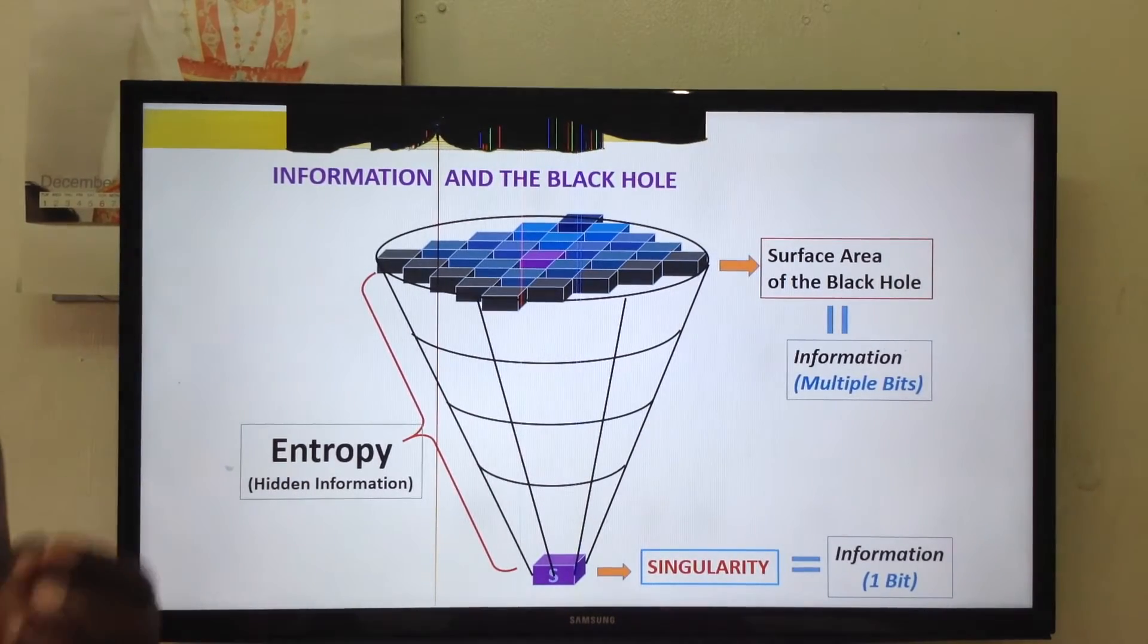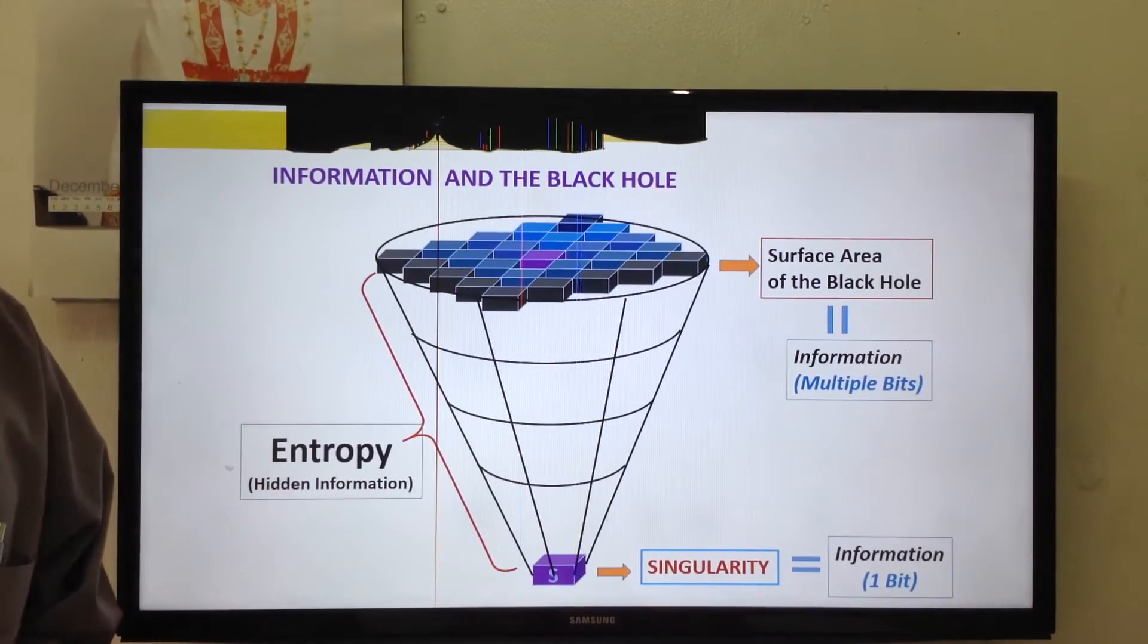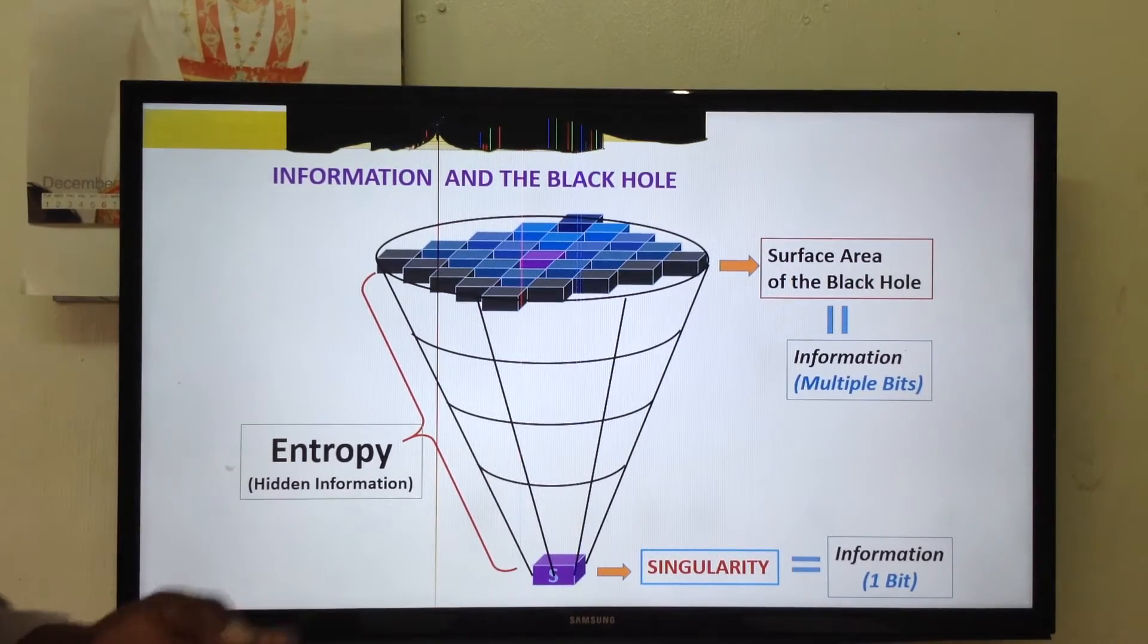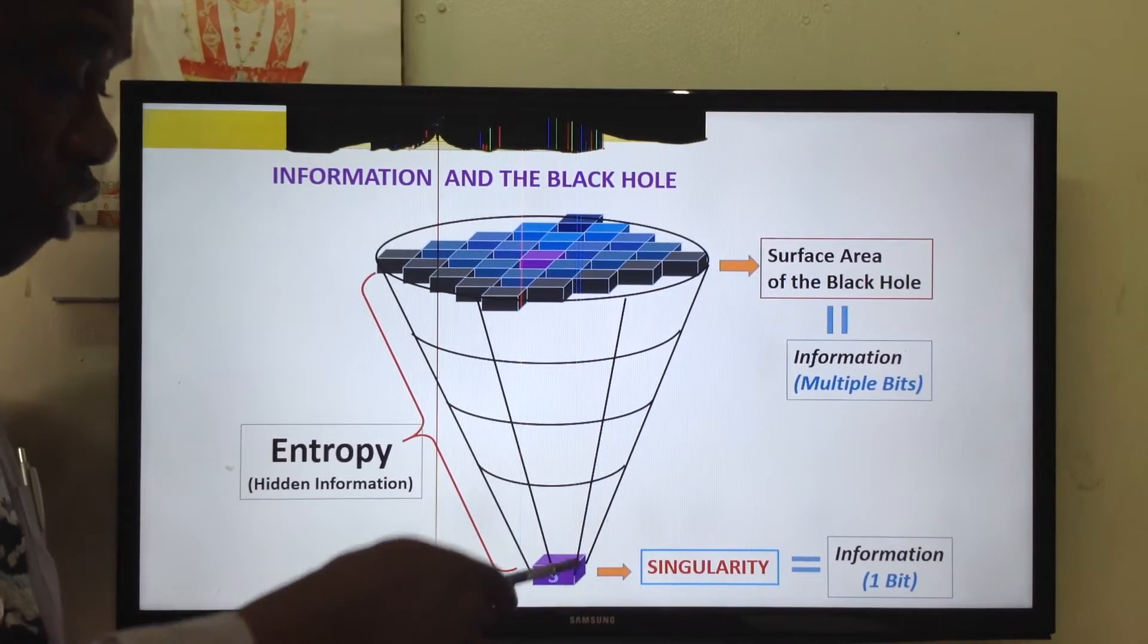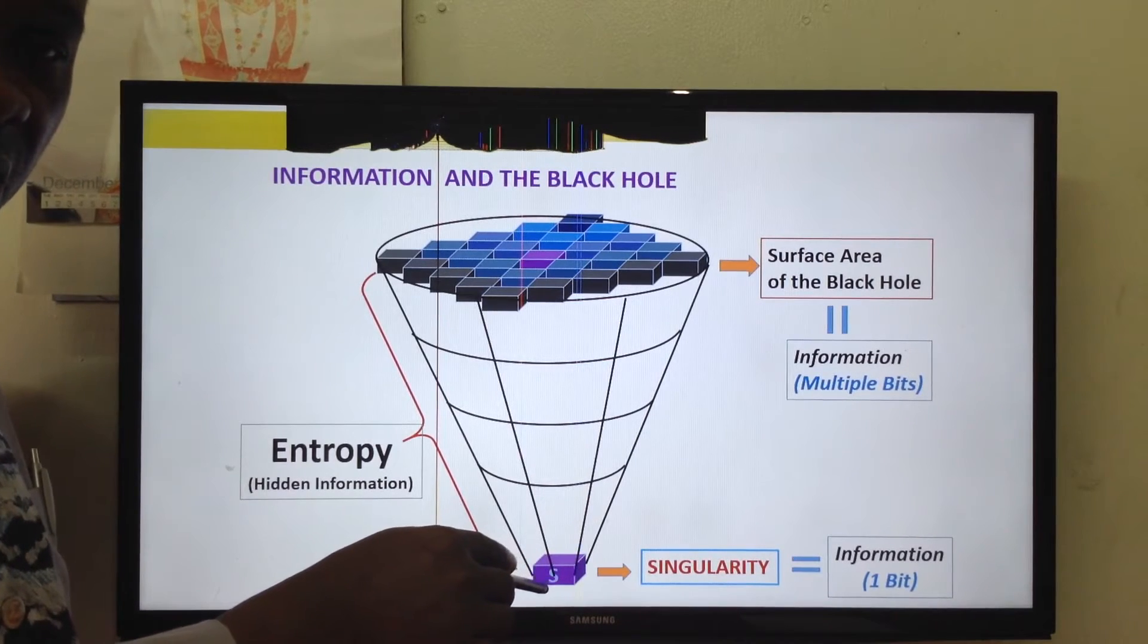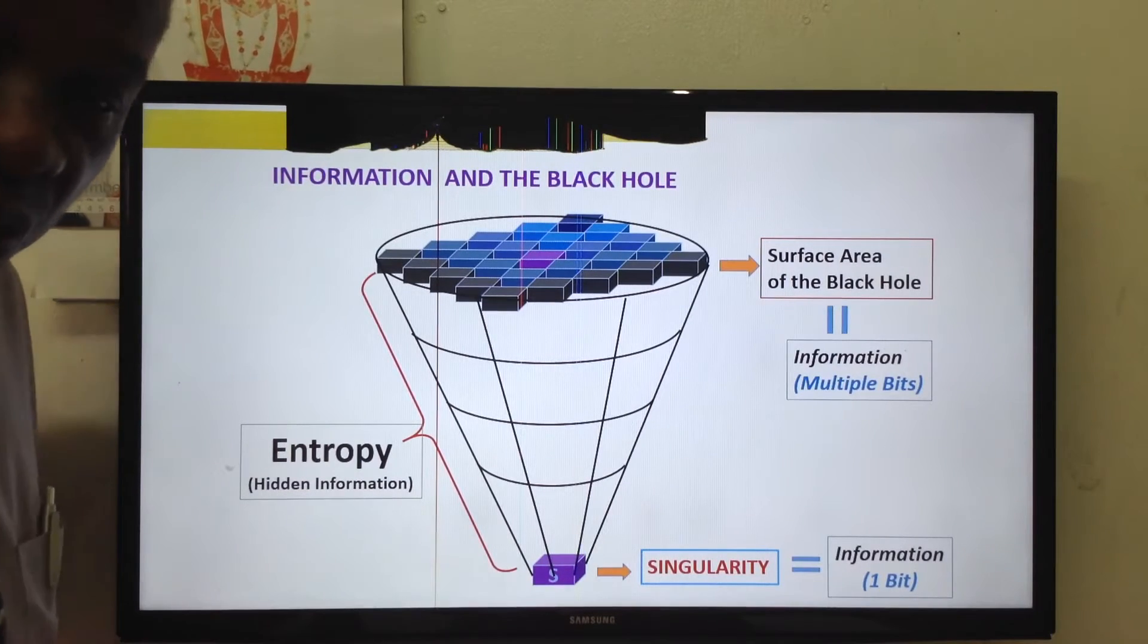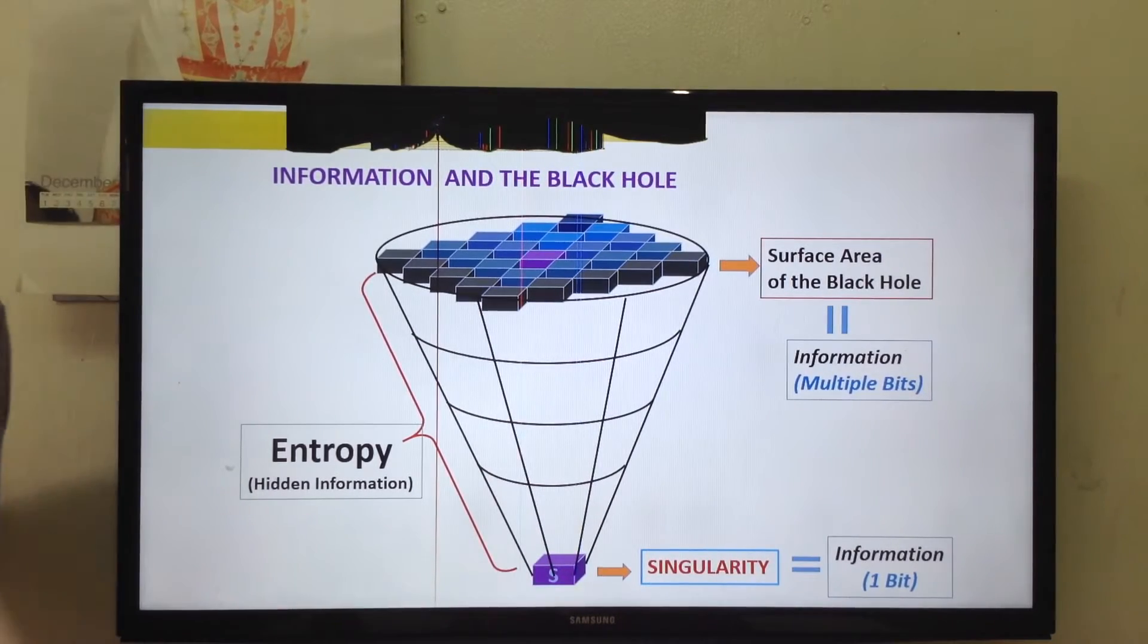But scientists never thought about the information of the star. If we had to look for the information of the star, where will we go? Of course, we said, the remains of the star is the singularity. Therefore, all the information of the star is compressed in this one point, it is called point. In our terms, we will call it one bit, just one bit of information.